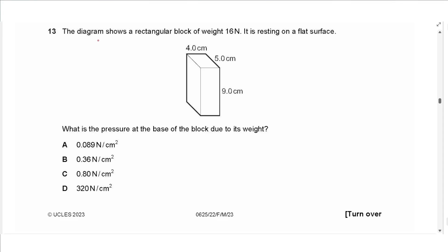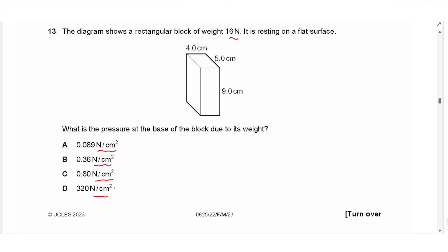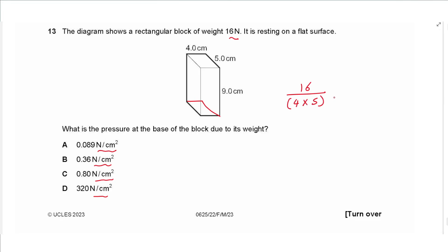Question 13: a rectangular block of weight 16 N rests on a flat surface. The unit required is N/cm², so no conversion needed. The base area is 4 × 5 = 20 cm². Pressure = 16 / 20 = 0.80 N/cm². The answer is C.